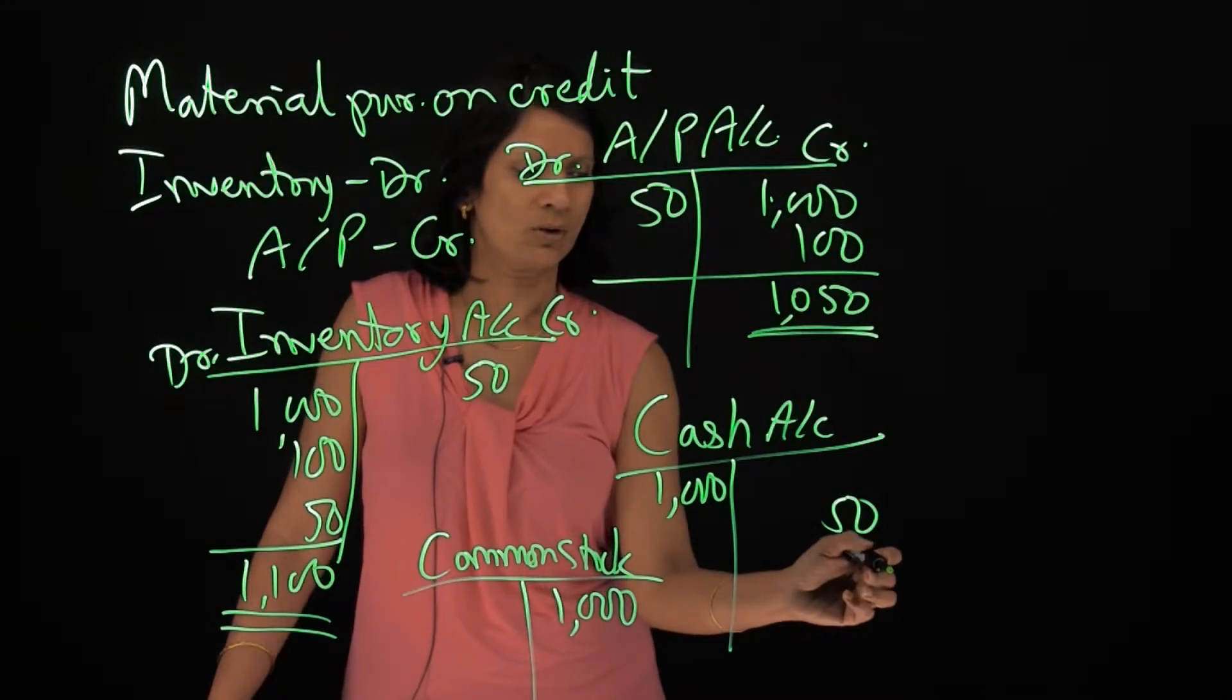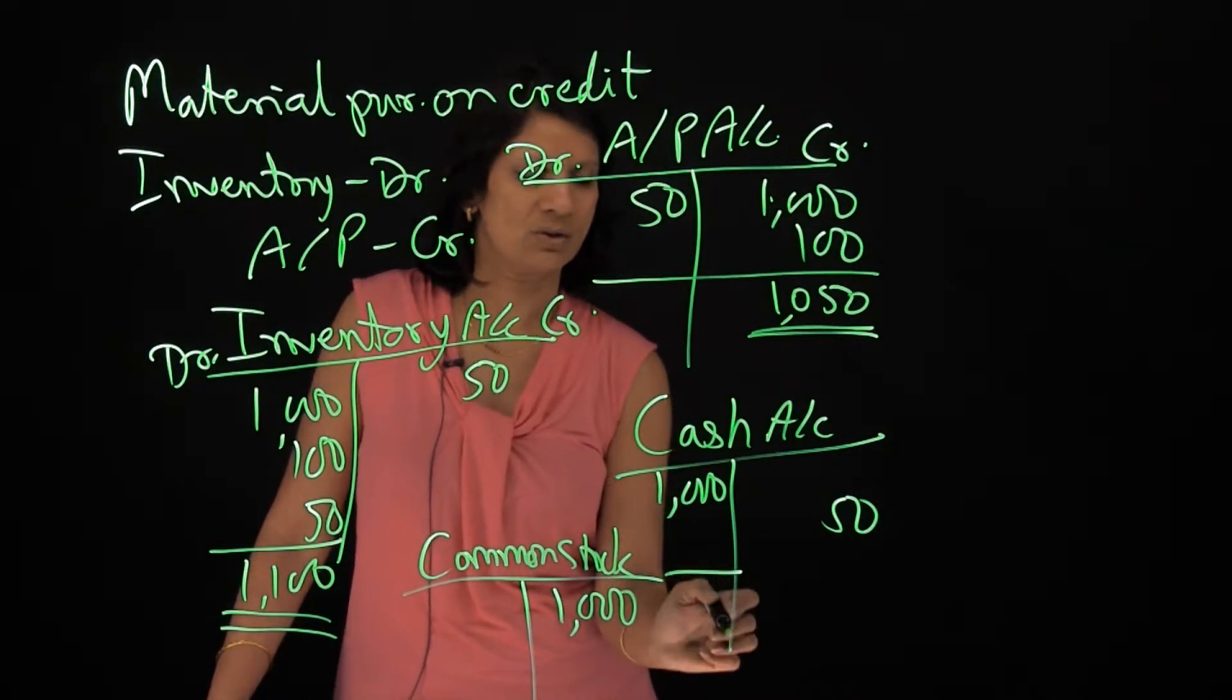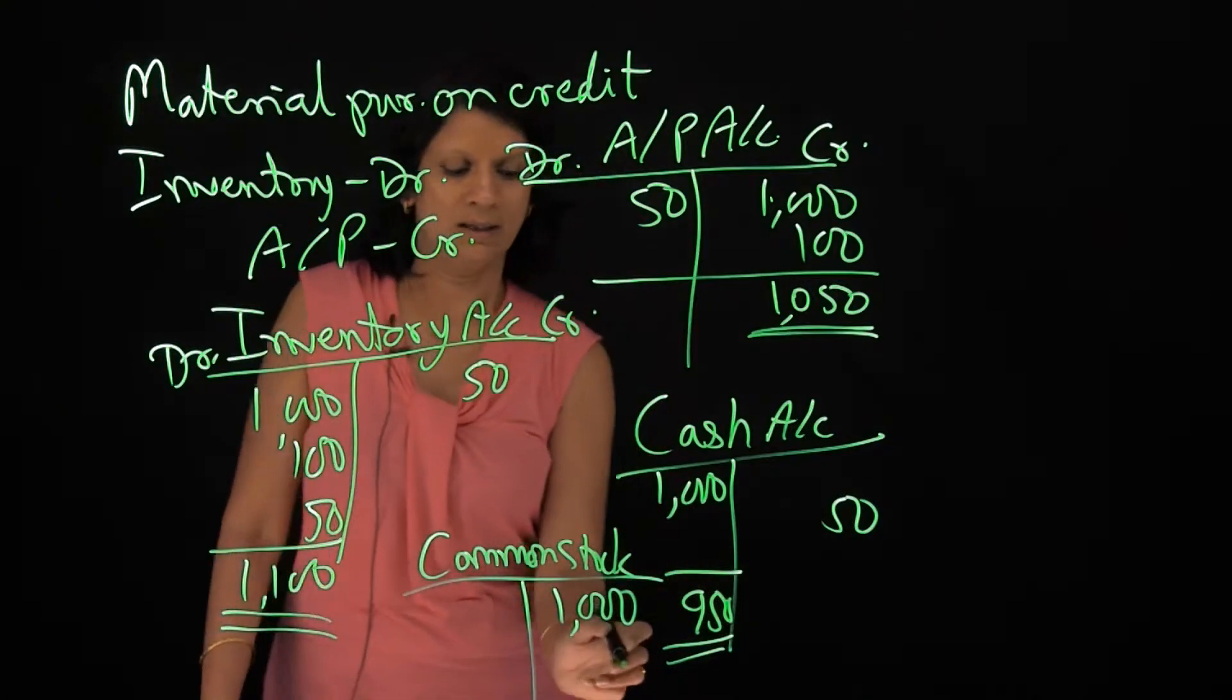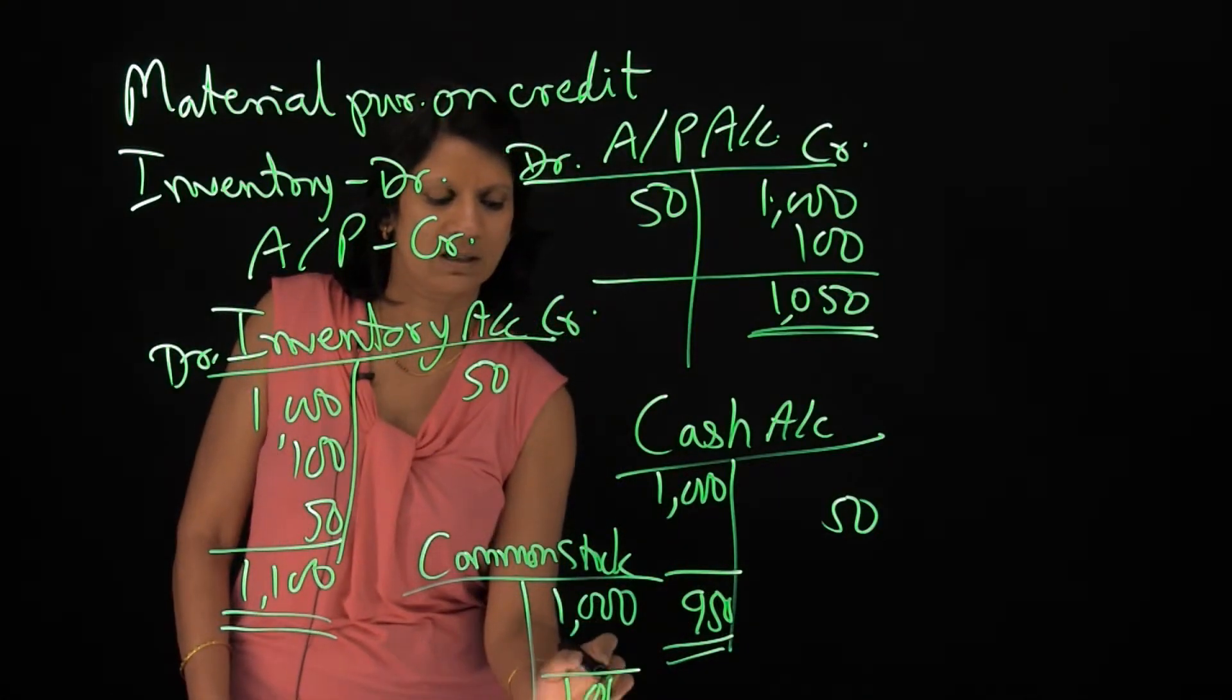And in the cash account, what I have is $1,000 minus $50. So $950 remain in my cash account. And I have common stock or capital worth $1,000.